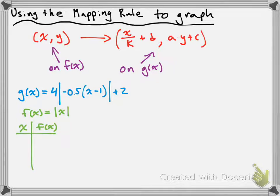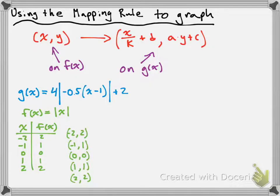I'm going to set up a table with x and f(x). I'll use x values of negative 2, negative 1, 0, 1, and 2. The y values — I take all the x values and force them to be positive — so I get 2, 1, 0, 1, 2. So the following points are on my parent function: (−2, 2), (−1, 1), (0, 0), (1, 1), and (2, 2).